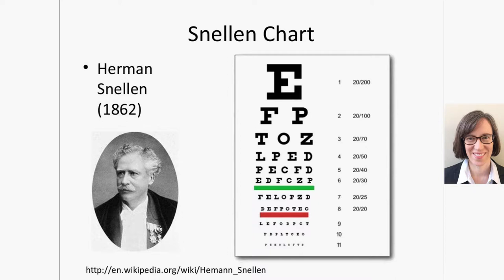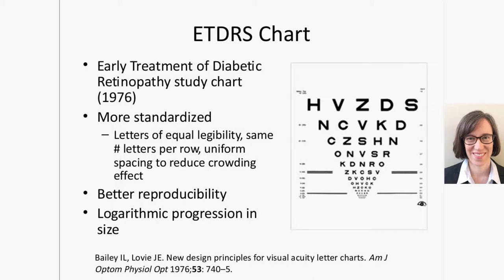For research purposes, we generally use the ETDRS chart, which stands for Early Treatment of Diabetic Retinopathy — a major clinical trial done in the 70s and 80s. They really wanted to measure vision change as accurately as possible, so they came up with a more standardized chart. This chart has an equal number of letters on each line, the letters are of equal legibility, and there's uniform spacing between letters and rows. The result is better reproducibility — if you have someone take this test and then repeat it a few days later, the score will be more similar than with the Snellen chart.